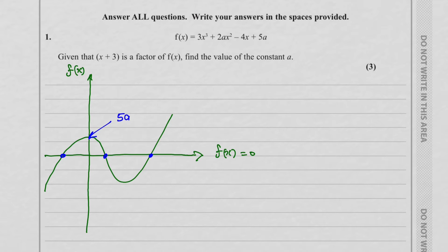Now what we need to do is set the factor to 0. We've got x plus 3 equal to 0. As you can see also, at the point of intercept on the y-axis, that's where the constant is, which is 5a. So therefore, we get x equals minus 3.